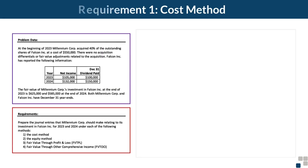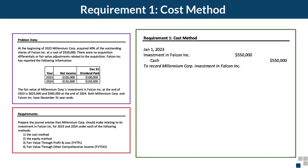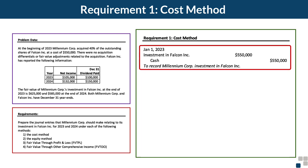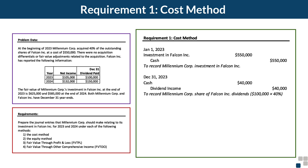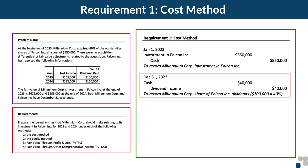Let's begin with requirement 1 under the cost method. Our first entry is to record Millennium's investment in Falcon — a debit to investment in Falcon Inc. and a credit to cash for the purchase price of $550,000. Under the cost method, the next chronological event is at December 31st, 2023, where Falcon pays dividends of $100,000, and Millennium Corp. records its share of $40,000, or 40%, as dividend income. The journal entry is a debit to cash and a credit to dividend income for $40,000.